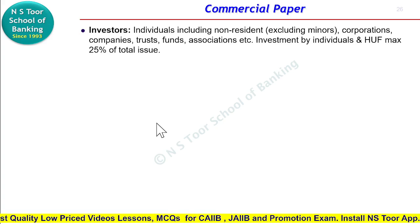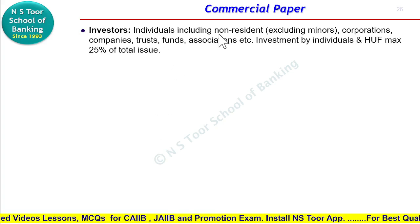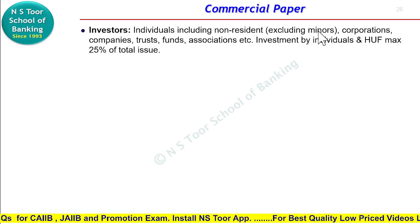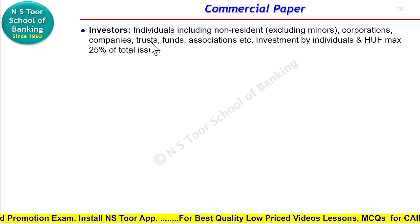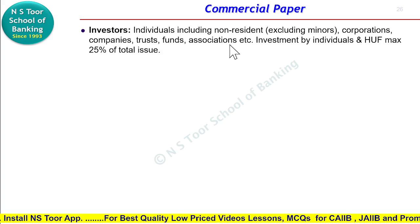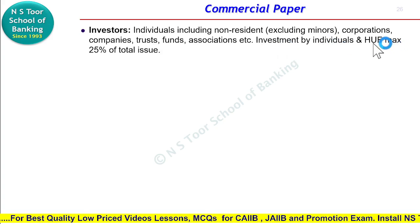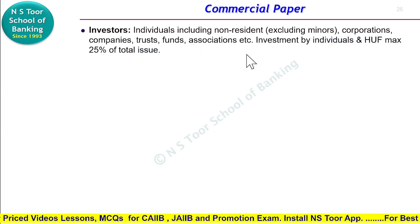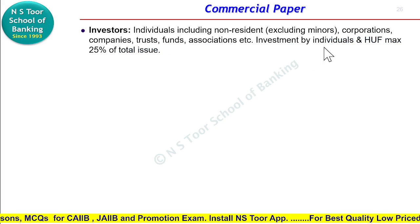Investors isme kaun kaun ho sakte hain? Investors mein individuals ho sakte hain — individuals ke andar non-residents bhi ho sakte hain, lekin minors nahi ho sakte. In addition, corporations, companies, trusts, funds, associations, aur even banks bhi ho sakte hain. Banks aur HUF agar investment karte hain to inke upar restriction hai — total issue ke 25% se zyada inका investment nahi hoga; in dono ka mila ke maximum investment could be 25% of total issue.